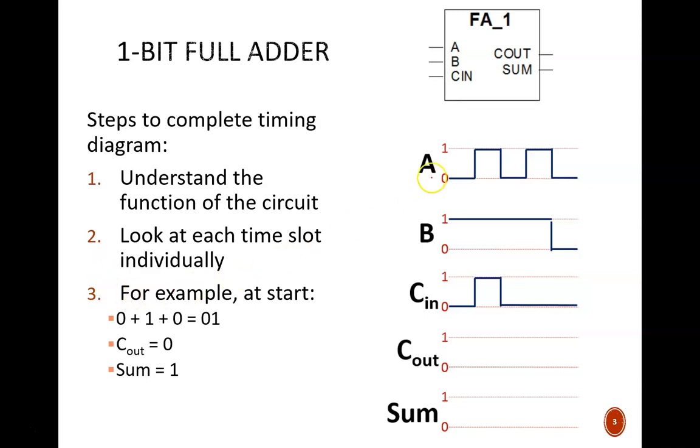Let's look at this full adder device. We know that its function is to arithmetically add the three input bits and produce a two-bit sum. In the first time slot, before any signals change values, the sum is 0 plus 1 plus 0. The Cout bit is 0 and the sum bit is 1.